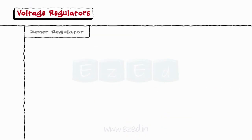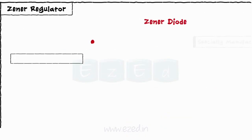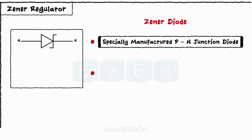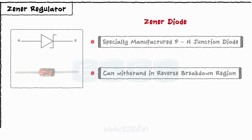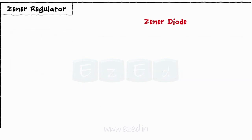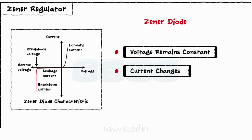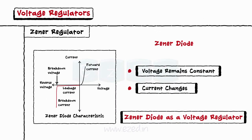Let's see the Zener regulator first. A Zener regulator is a specially manufactured P-N junction diode which can withstand in the reverse breakdown region. When a Zener regulator reaches reverse breakdown, its voltage remains almost constant even though the current changes drastically. This property enables the use of the Zener regulator as a voltage regulator.